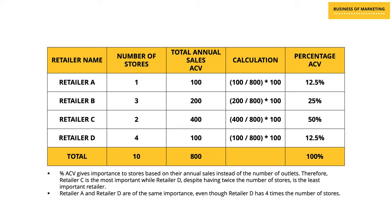Percentage ACV gives importance to stores based on their annual sales rather than the number of outlets. Retailer C is the most important retailer with 50% ACV, while retailer D — despite having twice the number of stores as C — is the least important. Retailer A and retailer D are of equal importance even though retailer D has four times the number of stores as retailer A.